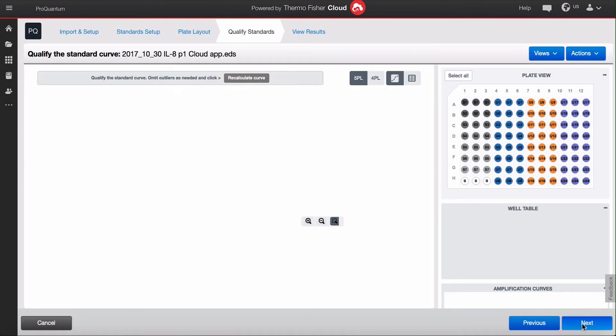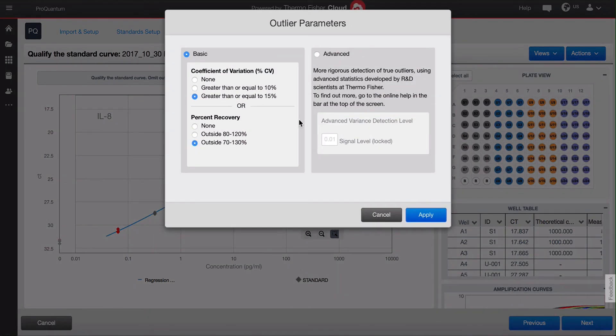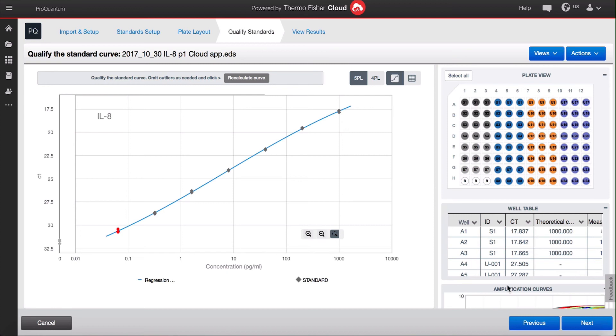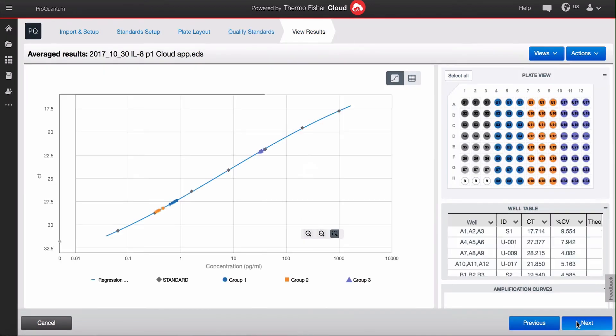You'll need to qualify your standard curve. Under the action button, there's an outlier detection tool to help flag any wells you may want to omit. Once you're satisfied with your standard curve, your unknown samples will be plotted on the curve.